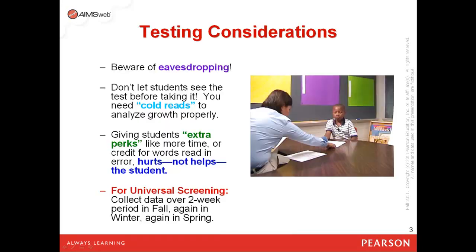As you begin to test students, there are a few things to be aware of. First, beware of students eavesdropping. If you're assessing a student in a location that's near where other students are sitting and listening, students can easily hear the other student who's reading, because that can actually increase their score, especially if they hear words they otherwise wouldn't know how to read. Don't let the student see the test before taking it. You need cold reads on these measures in order to analyze growth properly and also to identify students at risk.